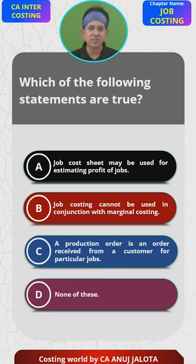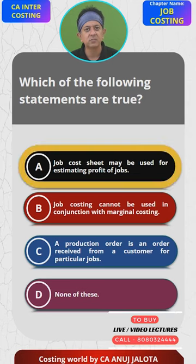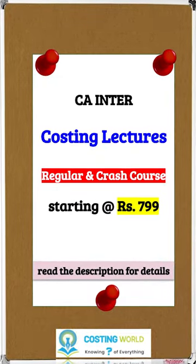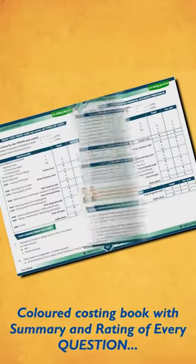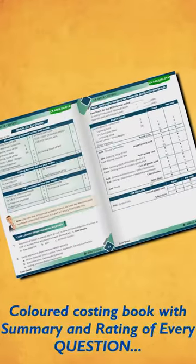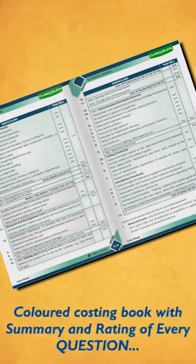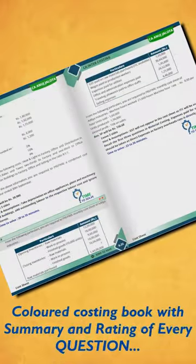Since C is wrong, option D — none of these — would only be selected if A was also incorrect, but A is correct. Therefore the correct answer is A.